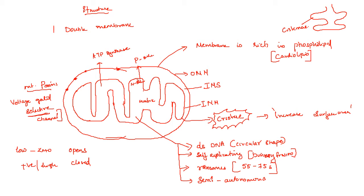Mitochondrial porins help transport proteins across the membrane. They are voltage-gated selective channels: when the voltage is low or near zero the channel opens, and when voltage is positive or high it closes. They are very selective — only proteins with a mitochondrial targeting signal can enter.